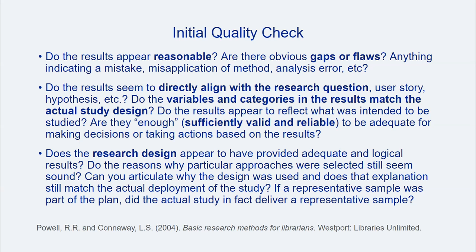One way to conduct an initial quality check is to examine the results to determine whether they align with the initial research question, user story, or hypothesis that frame the assessment project. Do the variables, categories, and groupings in the results reflect the actual study design? Do they appear to be sufficiently valid and reliable? This is a good time to articulate why the study design was used and how decisions made with regard to the study design may impact the results.